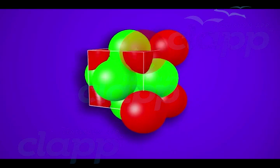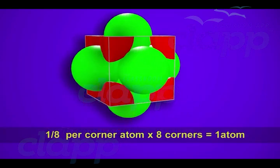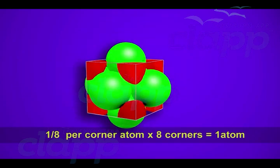That is, the number of atoms from the corners is 1/8 per corner atom times 8 corners, which equals 1 atom.